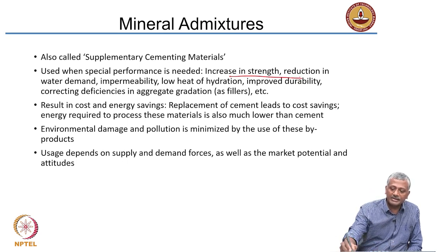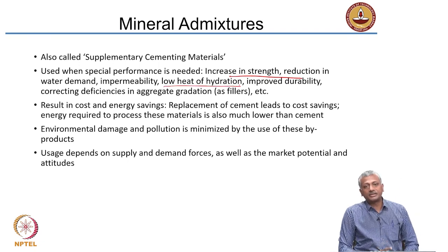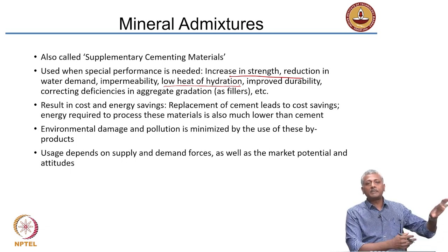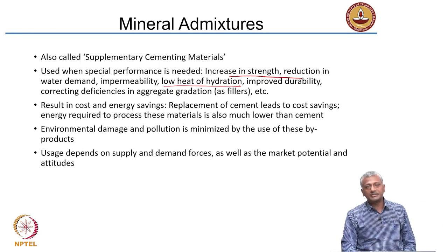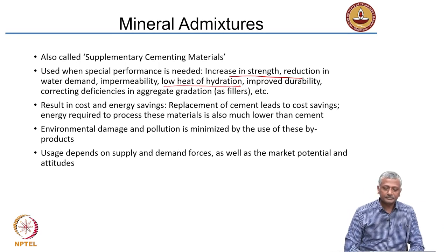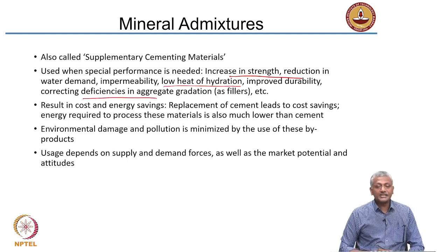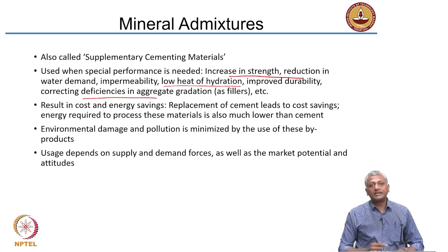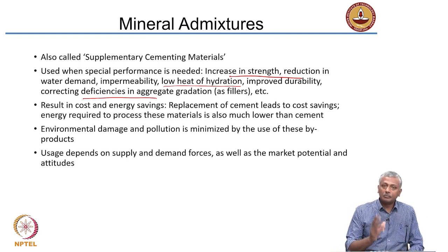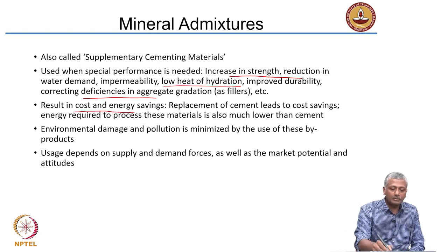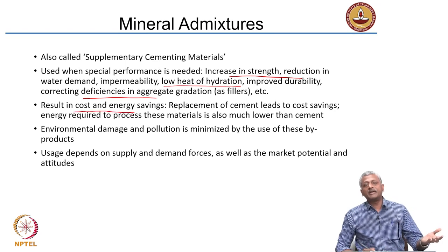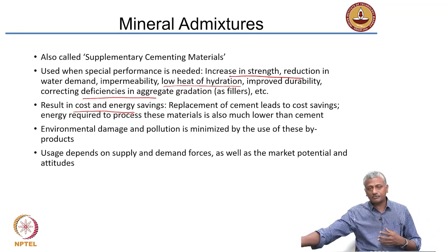These mineral additives increase additional CSH in the concrete, leading to improved durability. Generally they are used for increase in strength and durability. Sometimes they may also be used for reducing the heat of hydration — if you do not have a low heat cement, simply replace cement with fly ash and that brings down the heat significantly. Sometimes they can also be added as fillers to improve the overall gradation for good quality packing. Most importantly, they lead to cost and energy savings because you replace cement, the most costly ingredient, with a supplementary material that is a byproduct or waste from another industry.